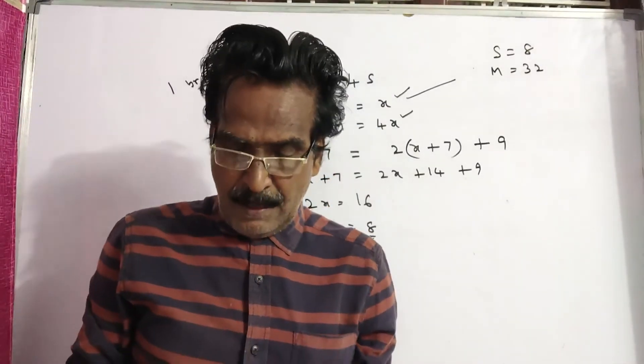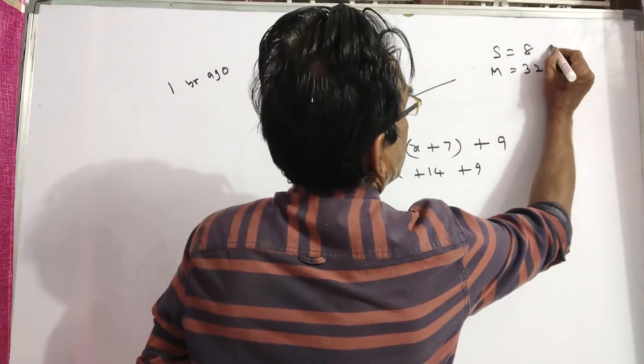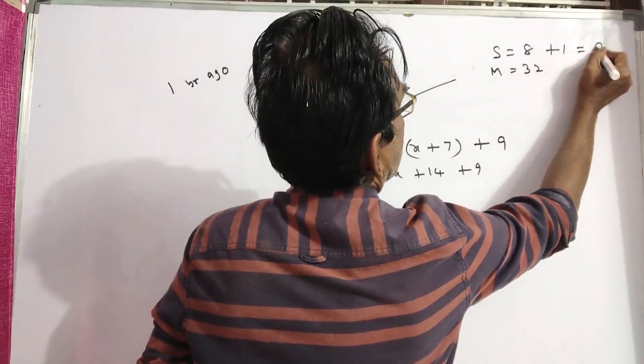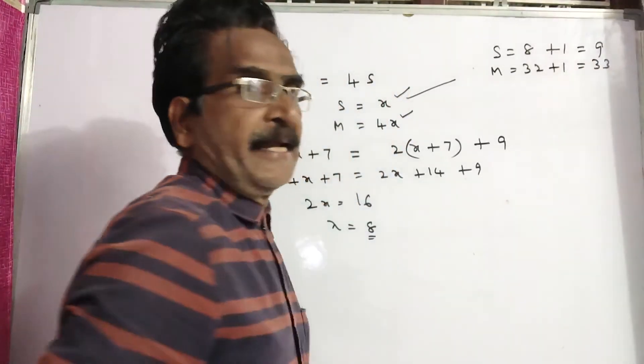Now let us see the question. Find their present ages. So present ages means 8 plus 1, son is equal to 9, and man will be 33.